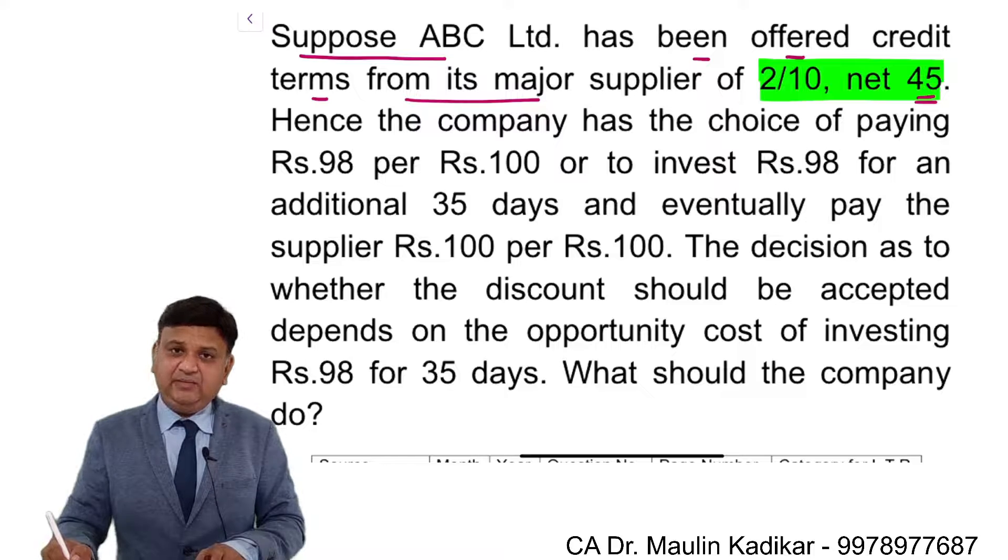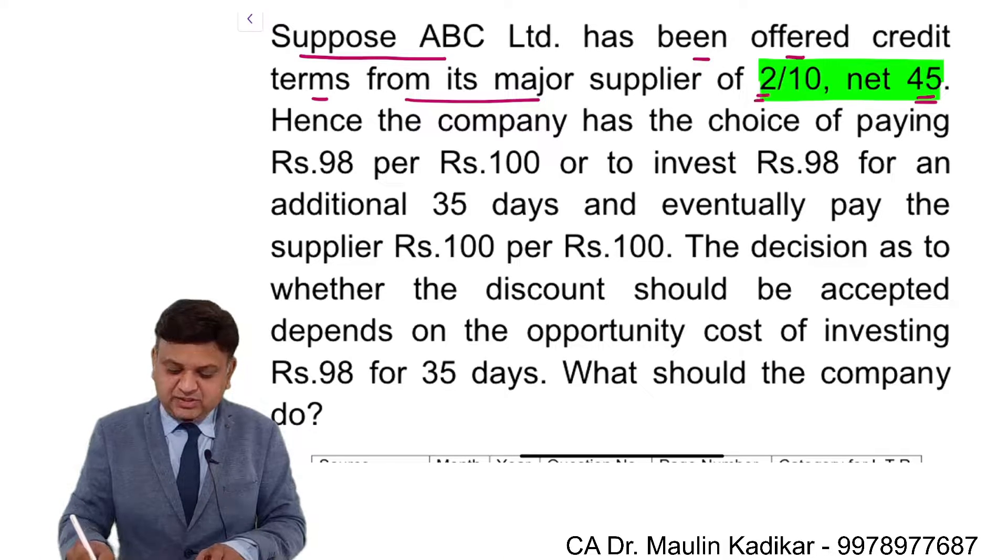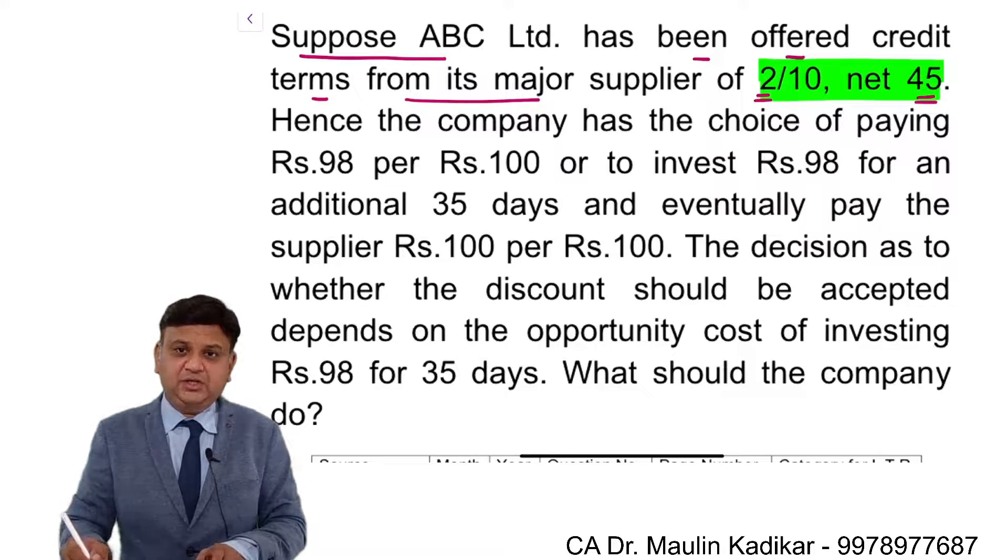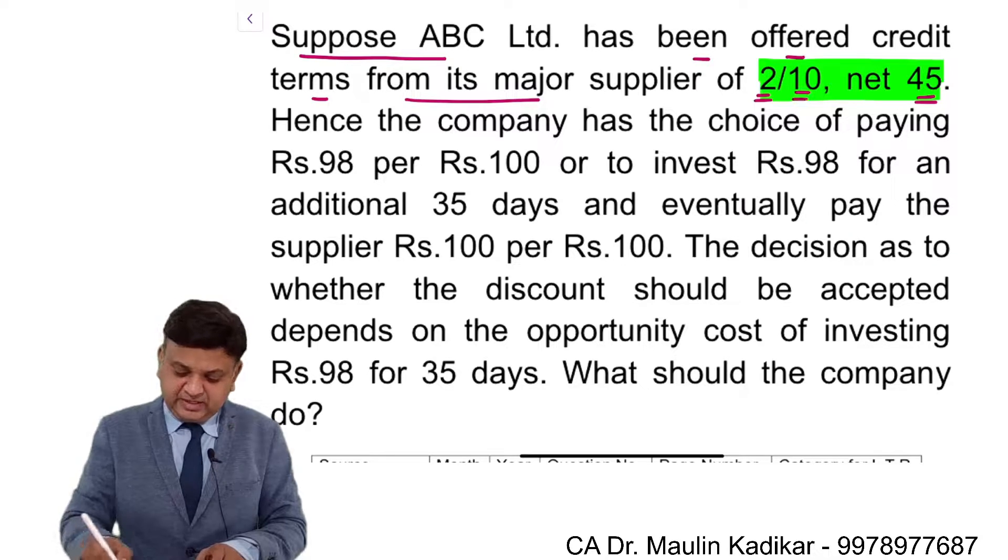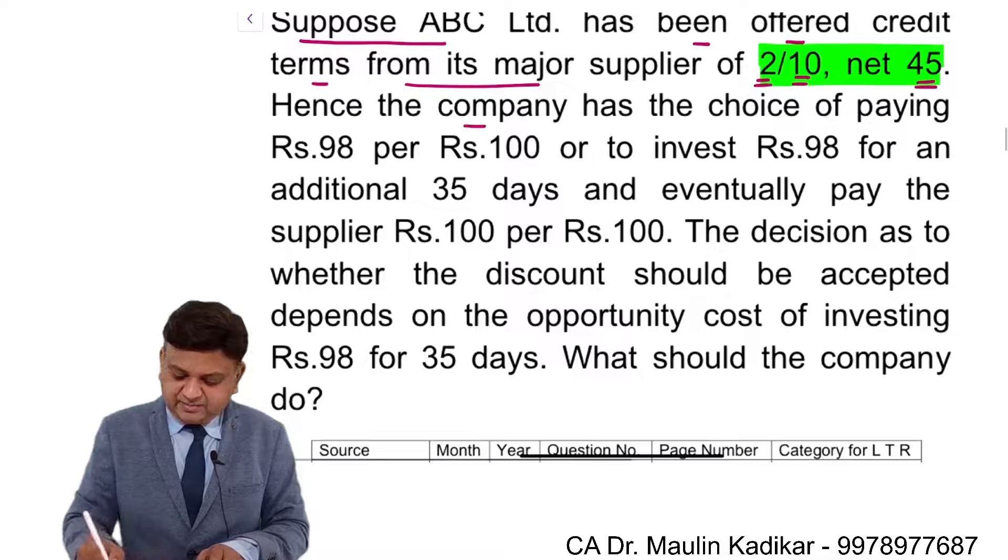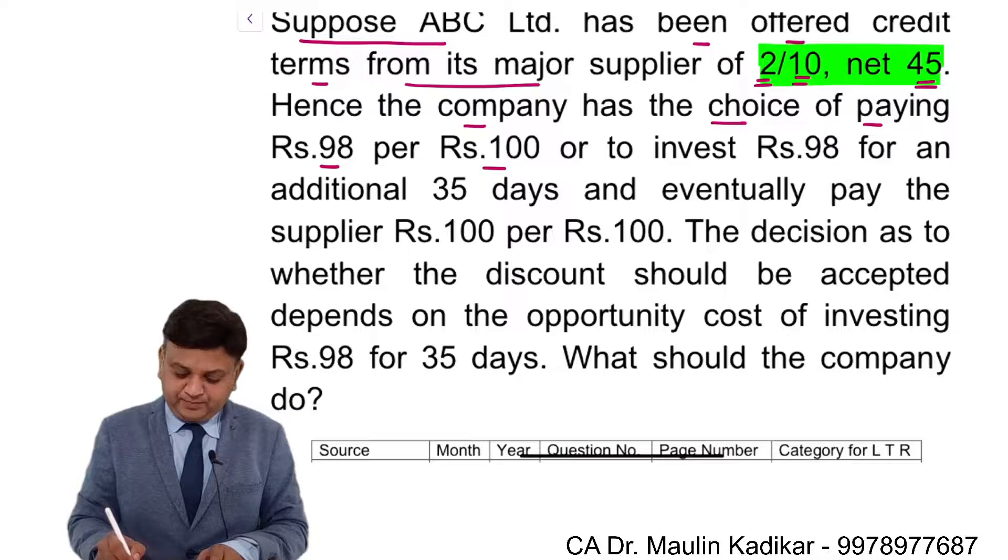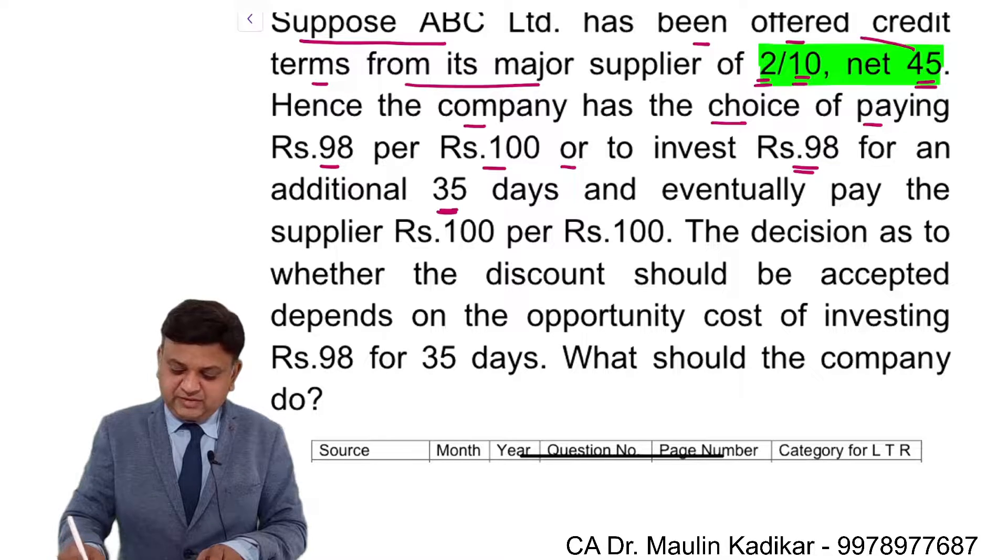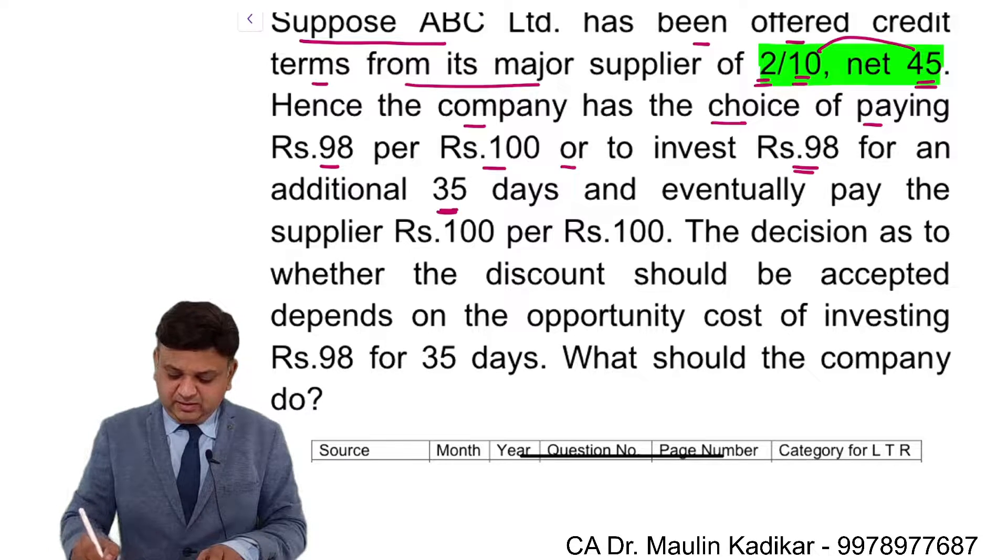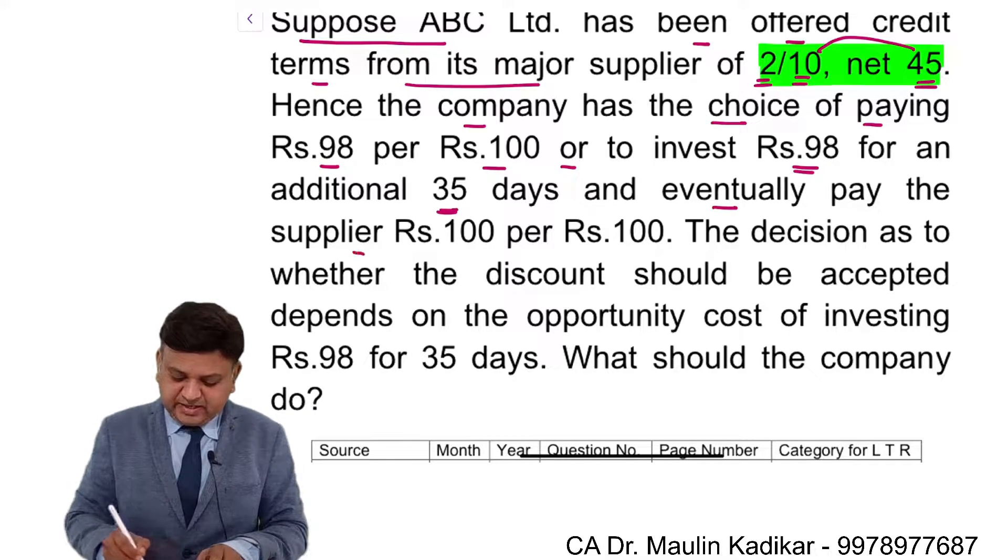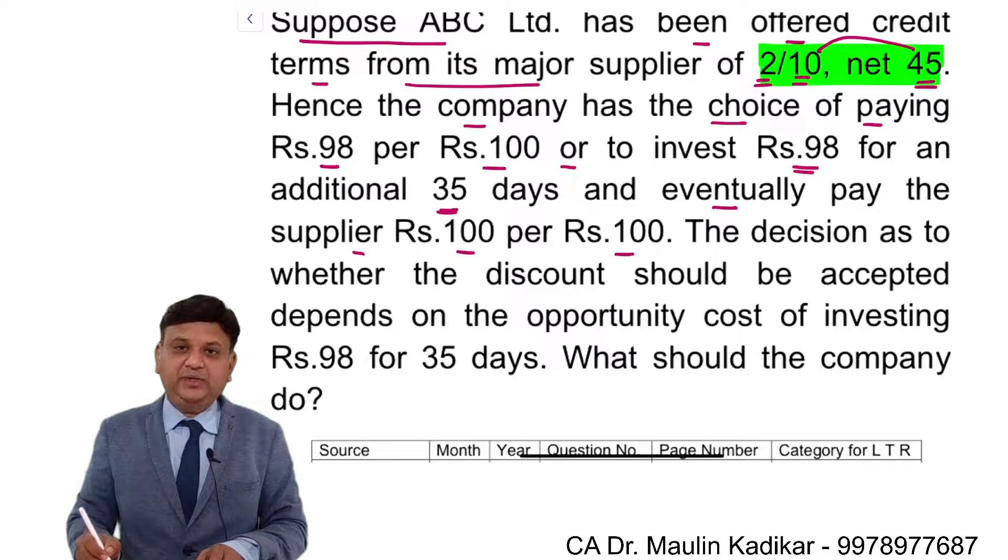It means that we have been offered a credit period of 45 days. At the same time, we have been offered a cash discount at the rate of 2 percentage if at all we make payment within 10 days. Hence, the company has the choice of paying Rs. 98 per Rs. 100 or to invest Rs. 98 for additional 35 days. 35 is difference of 45 and 10 and eventually pay the supplier Rs. 100 per 100 rupees.